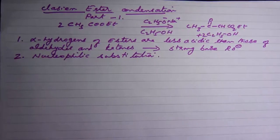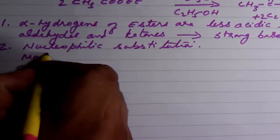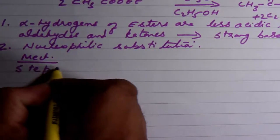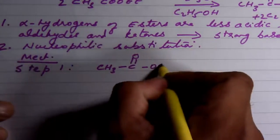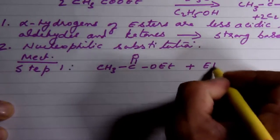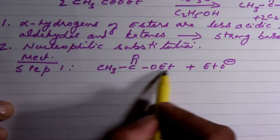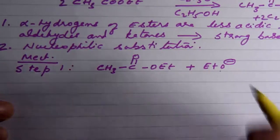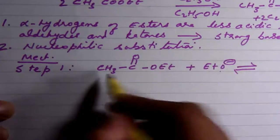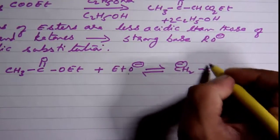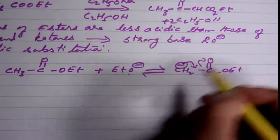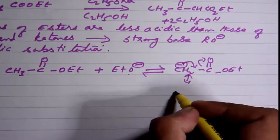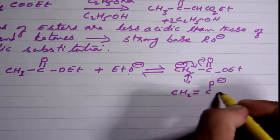Now let's see the mechanism. Step one: we have the ester with the alpha hydrogen, and we treat this with the ethoxide. We always use the same alkoxide as the alkoxide of this particular part of the ester. In a reversible step, this picks up the alpha hydrogen and you get the carbon anion, and this carbon anion is resonance stabilized. We have CH2=C-O⁻-OEt.